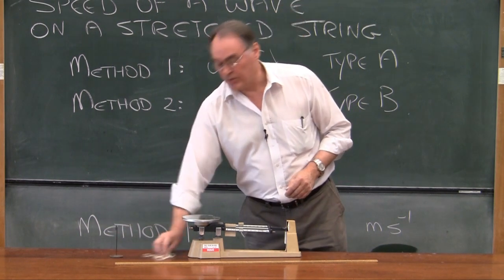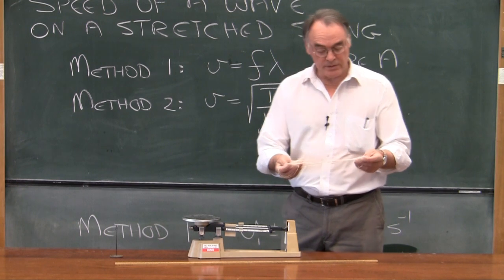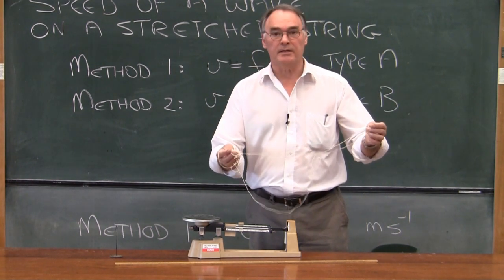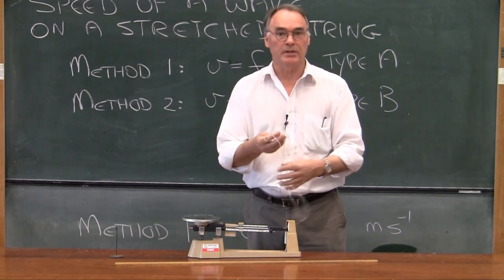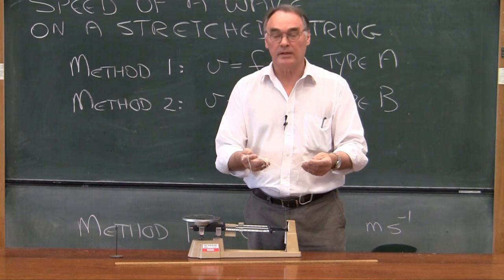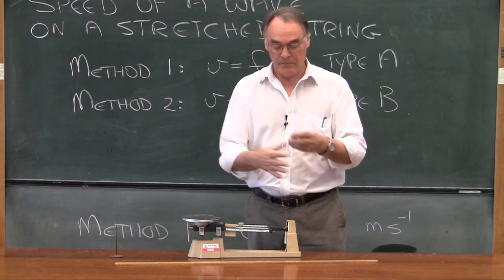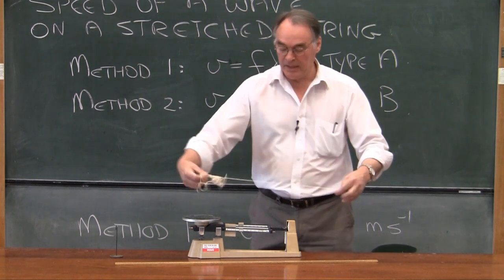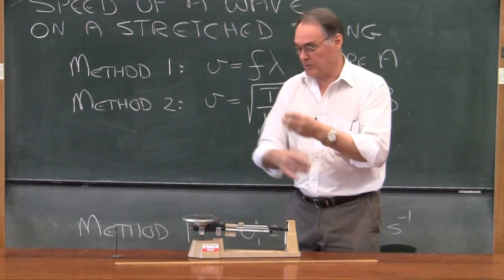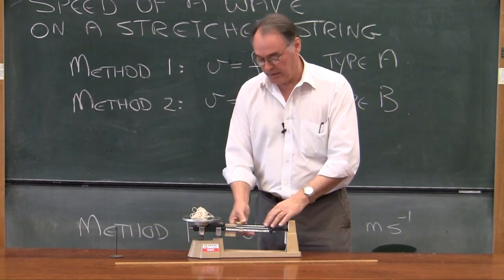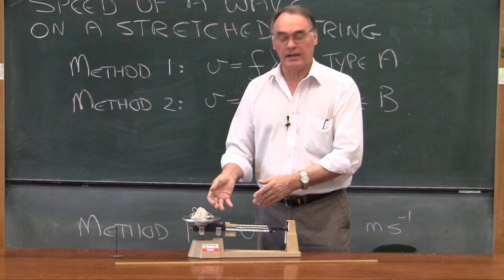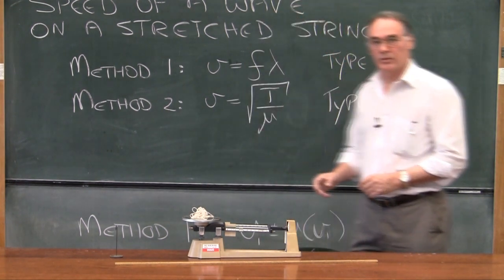The second thing you've got to do is you'll see that there are lengths of string like this. This is the same type of string that's used in the experiment in the lab. You need to determine the length of the string as well as the mass of the string, once again using the triple beam balance. And remember that when you are doing these measurements, you're doing a Type B analysis of uncertainty.